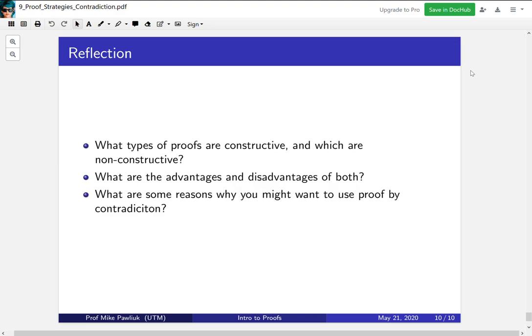Finally, let's take some time to reflect. What types of proofs are constructive and which types are non-constructive? What are the advantages and disadvantages of both types of proof? What are some reasons why you might want to use proof by contradiction, and what are some reasons you might want to avoid it? Thank you very much and have a good day.